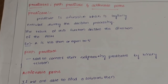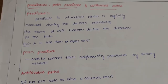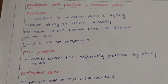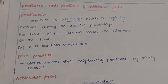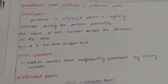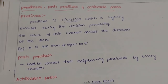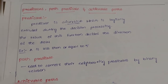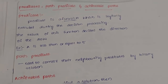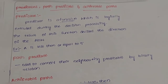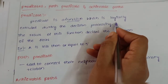In this video we are going to discuss predicates, path predicates, and achievable paths. A predicate is a function, also known as a decision, which is executed during the processing of any program. A predicate is a function which is logically executed during decision processing.